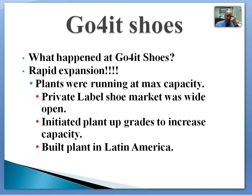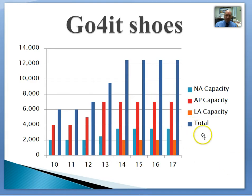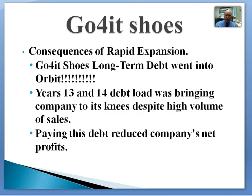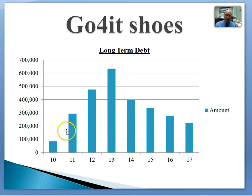Now they talk about why they finished as they did. They say the problem was 'rapid expansion' — but the reality is they over-expanded. They talk about how they ramped things up. But what's the value of this slide without any context? Is 12 million shoes a lot or a little in the industry? There are no industry standards, no comparison numbers to help you understand the data. The big thing is that rapid expansion created pricing problems — they couldn't sell the volume of shoes they needed at a profitable price point.